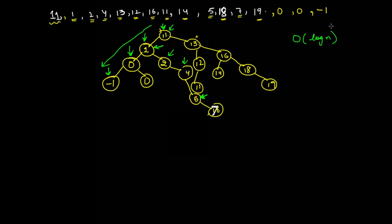We will see this time complexity when we study algorithms. In searching, why do we use a binary search tree? Because the searching time complexity in a binary search tree is less than in binary trees. In a regular binary tree, we have to search every single node. But in a binary search tree, we only compare with nodes and search only O(log n) nodes on average.